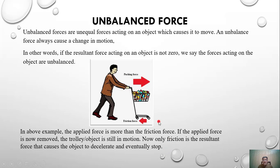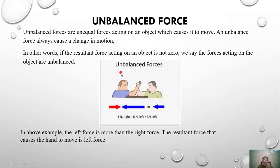Another example: two persons applying force on each other's hands. The left force is greater than the right force. The resultant force causes the hand to move left. If 3 newtons is applied by the right and 6 newtons by the left, the resultant net force is 3 newtons to the left.